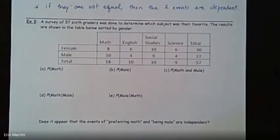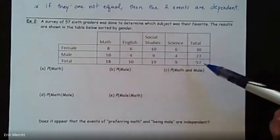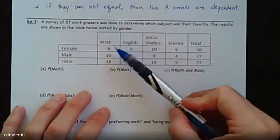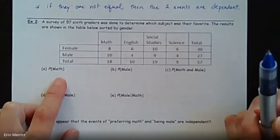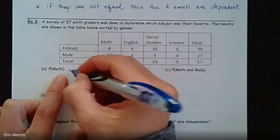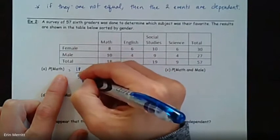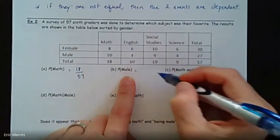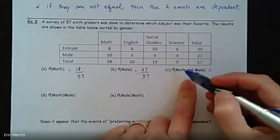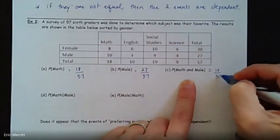A survey of 56 sixth graders was done to determine which subject was their favorite — results sorted by male and female, with options math, English, social studies, science. What is the probability that math is their favorite subject? Look at the total for the math column: that's 18 out of 57 total kids. What's the probability that you pick somebody and they happen to be male? There are 27 males out of 57. What's the probability they like math and are male? Go to the overlap — math and male — there are 10 kids out of 57 total.